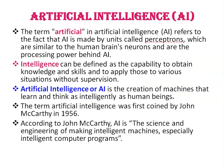The term 'Artificial' in Artificial Intelligence refers to the fact that it is made by units called perceptrons, which are similar to the human brain's neurons and are the processing power behind artificial intelligence. Intelligence can be defined as the capability to obtain knowledge and skills and to apply those to various situations without supervision.